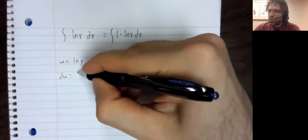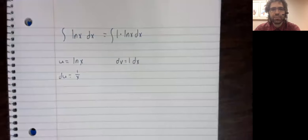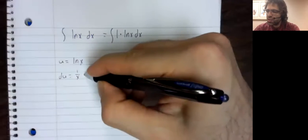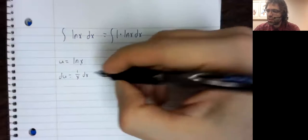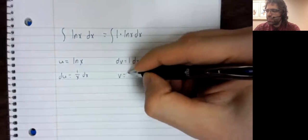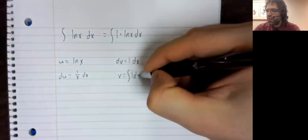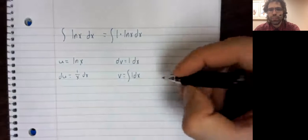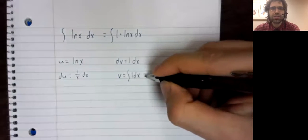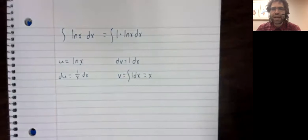du equals one divided by x dx. v is the antiderivative of one dx, which is x.